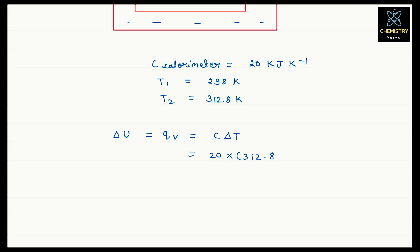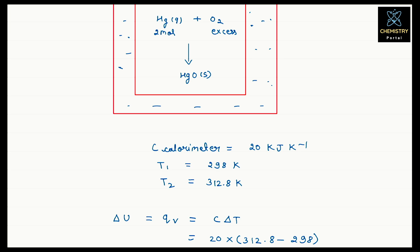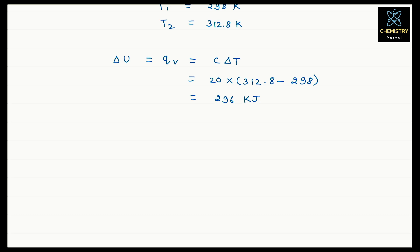So ΔU = 20 × (312.8 − 298) = 296 kilojoule. This value is for 2 moles of HgO. But if we define ΔH combustion, it is for 1 mole. Also, it will be negative because combustion reactions are always exothermic.